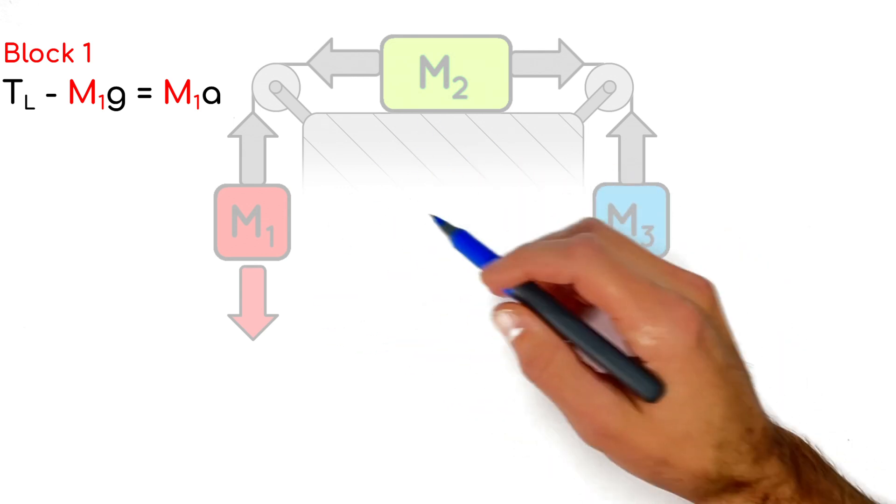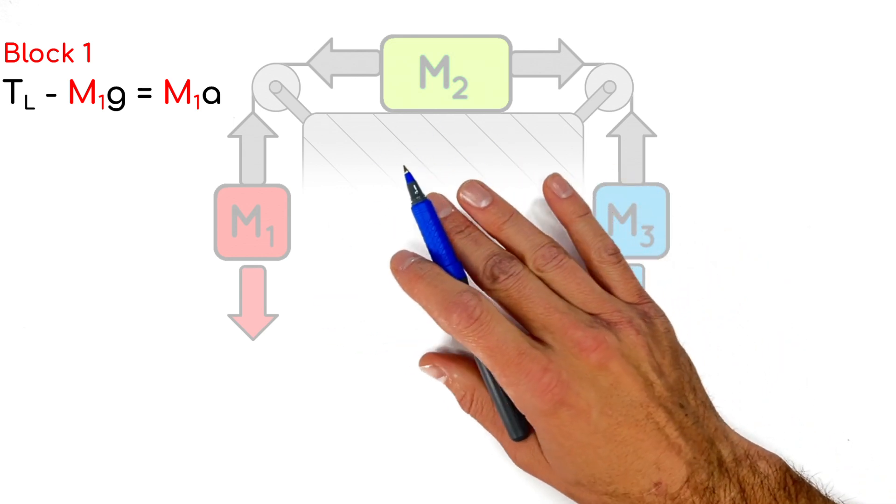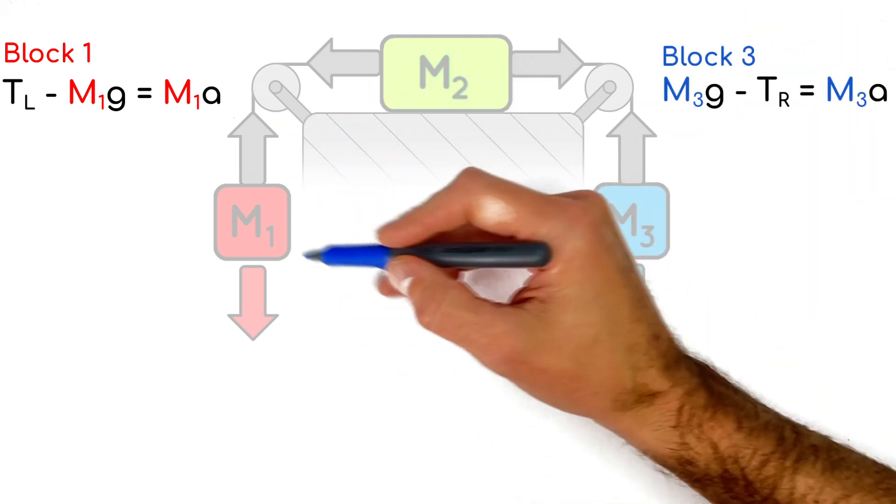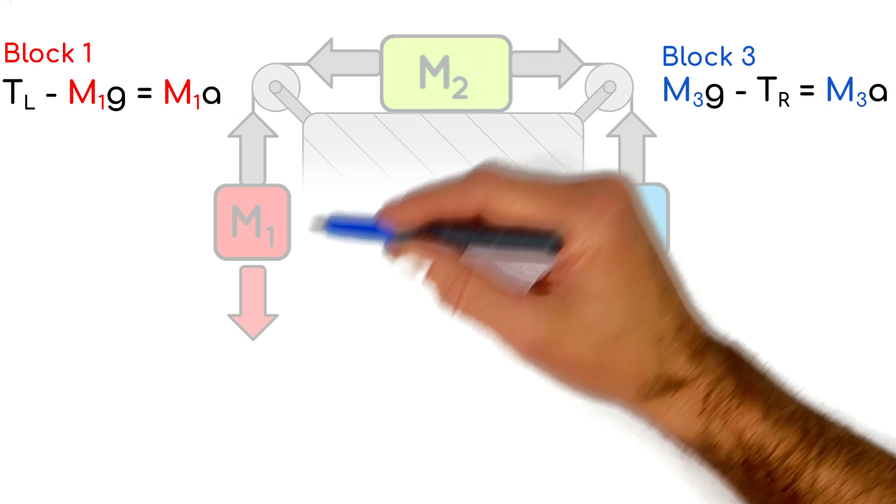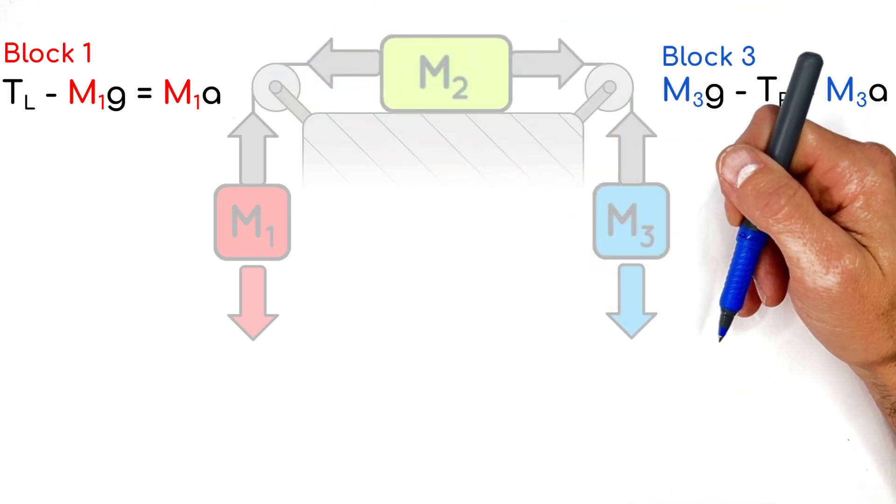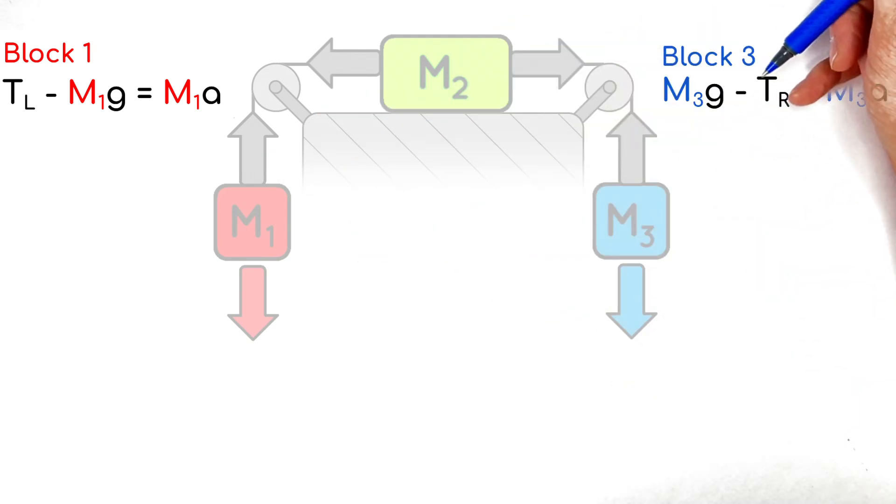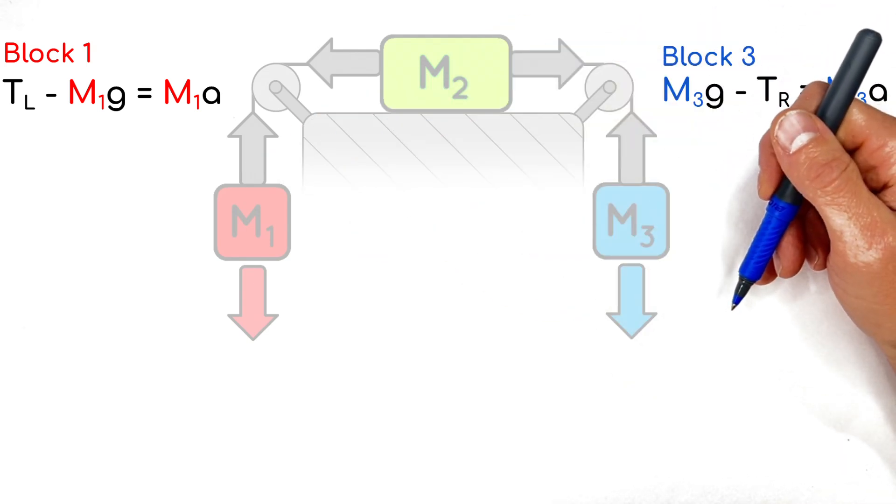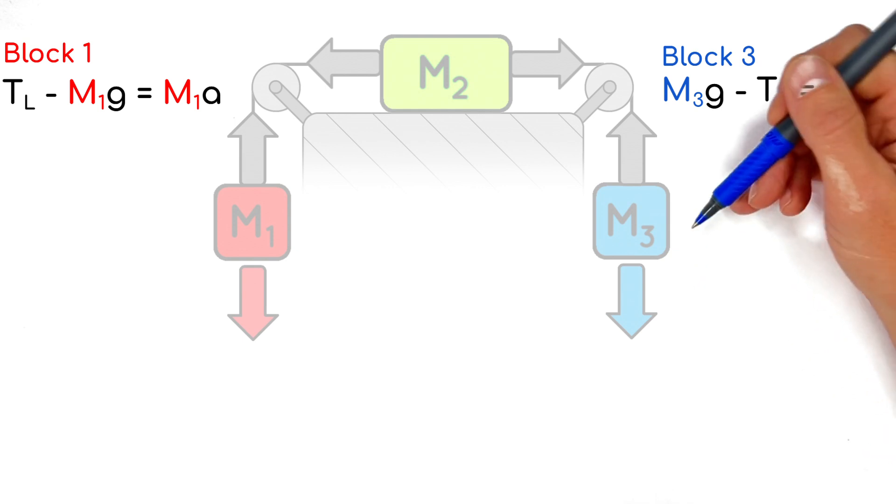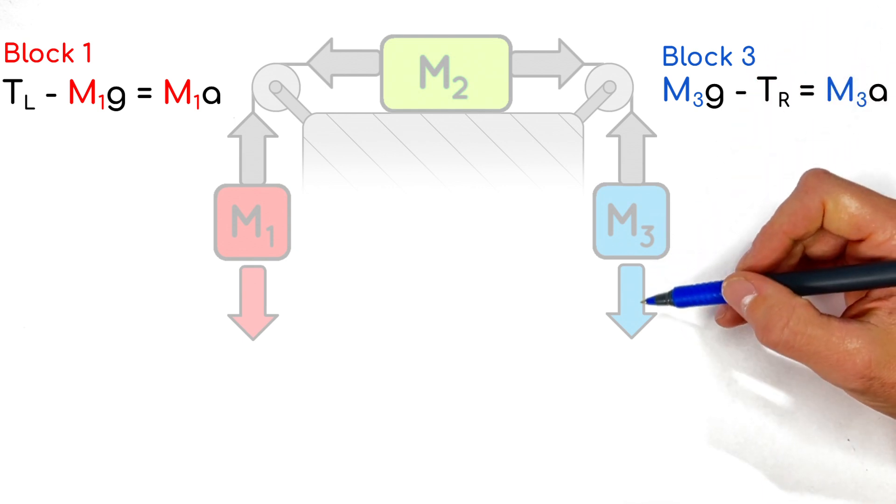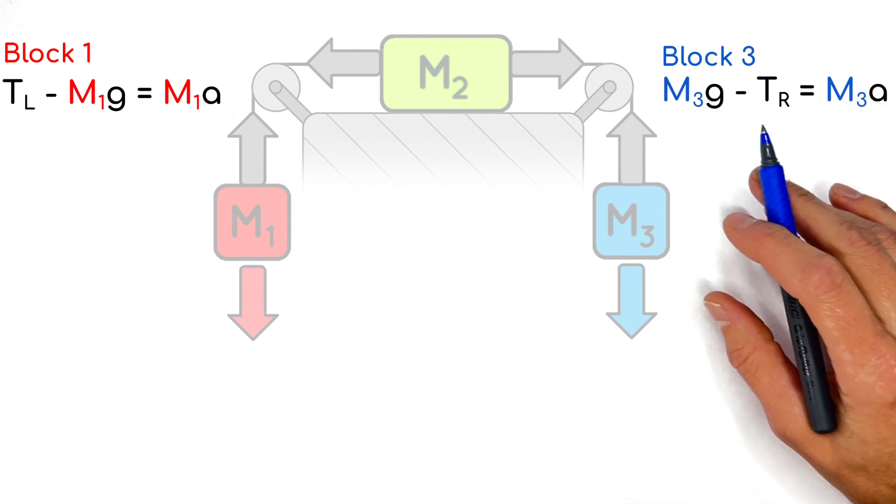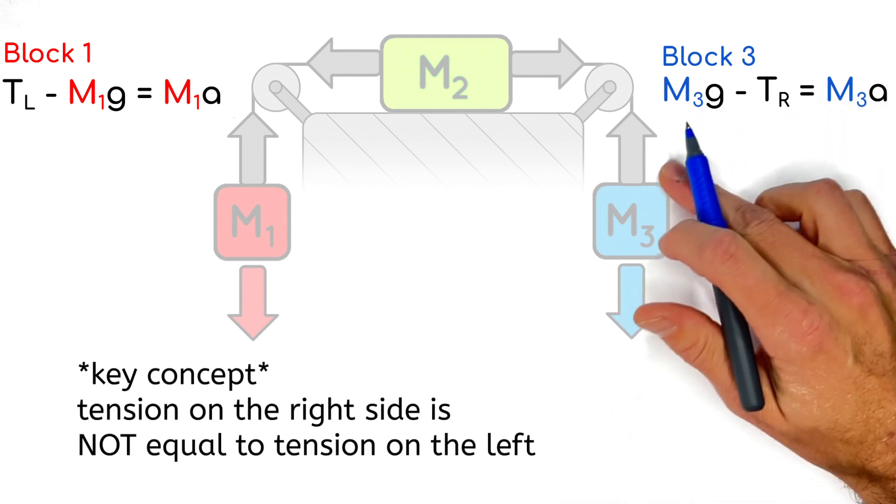Now, I actually want to hold off on this block right here in the middle for a second. Let's go over to this block over here on the right now. If we said the upward motion of this block over here on the left was positive, that would actually correlate to the downward motion of this block on the right. And so while I said up was positive here, I'm actually going to say downward is positive over here on the right-hand side. So when we apply Newton's second law to this block right here, we're going to have M3G downward minus the tension in the string.